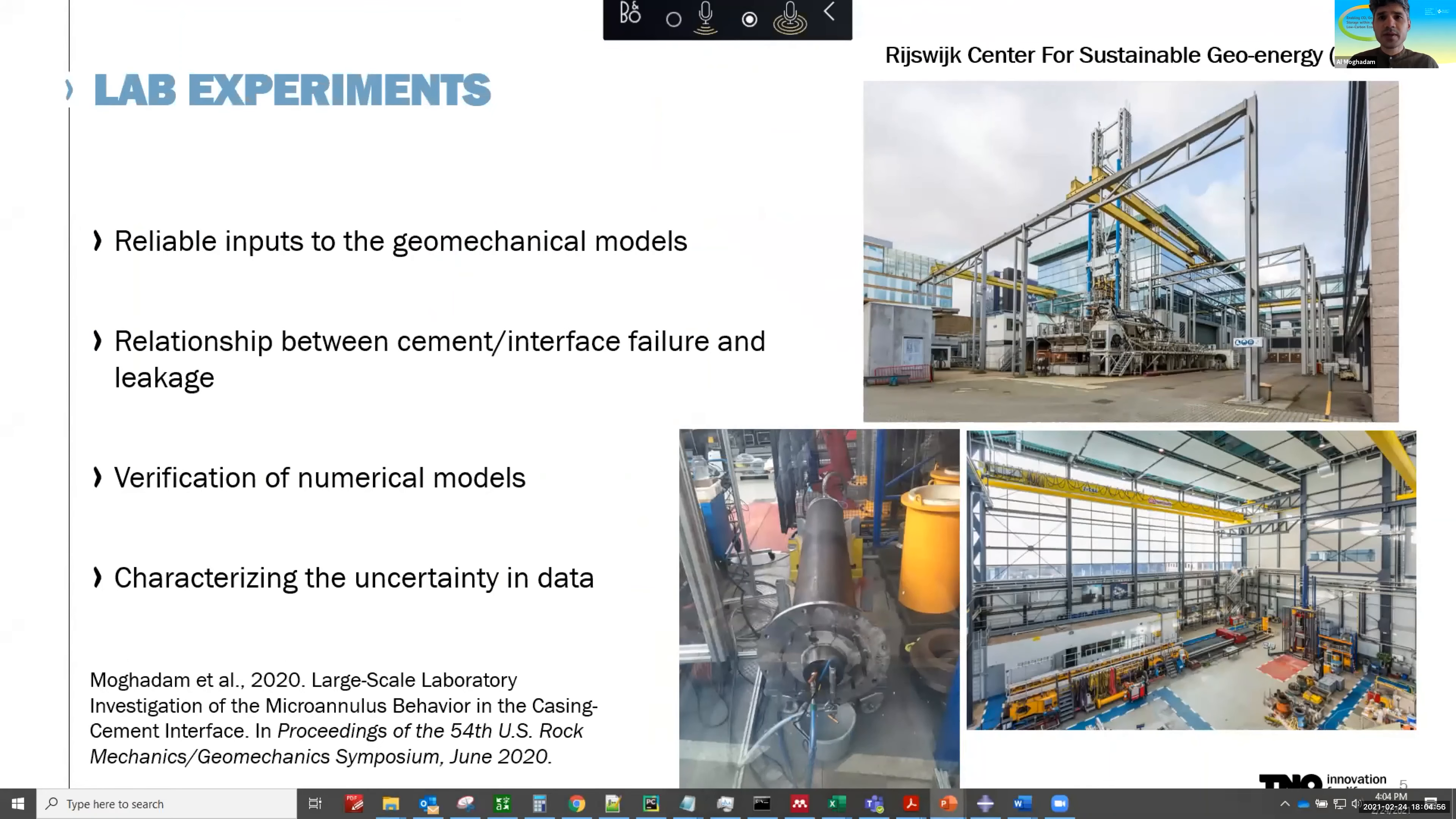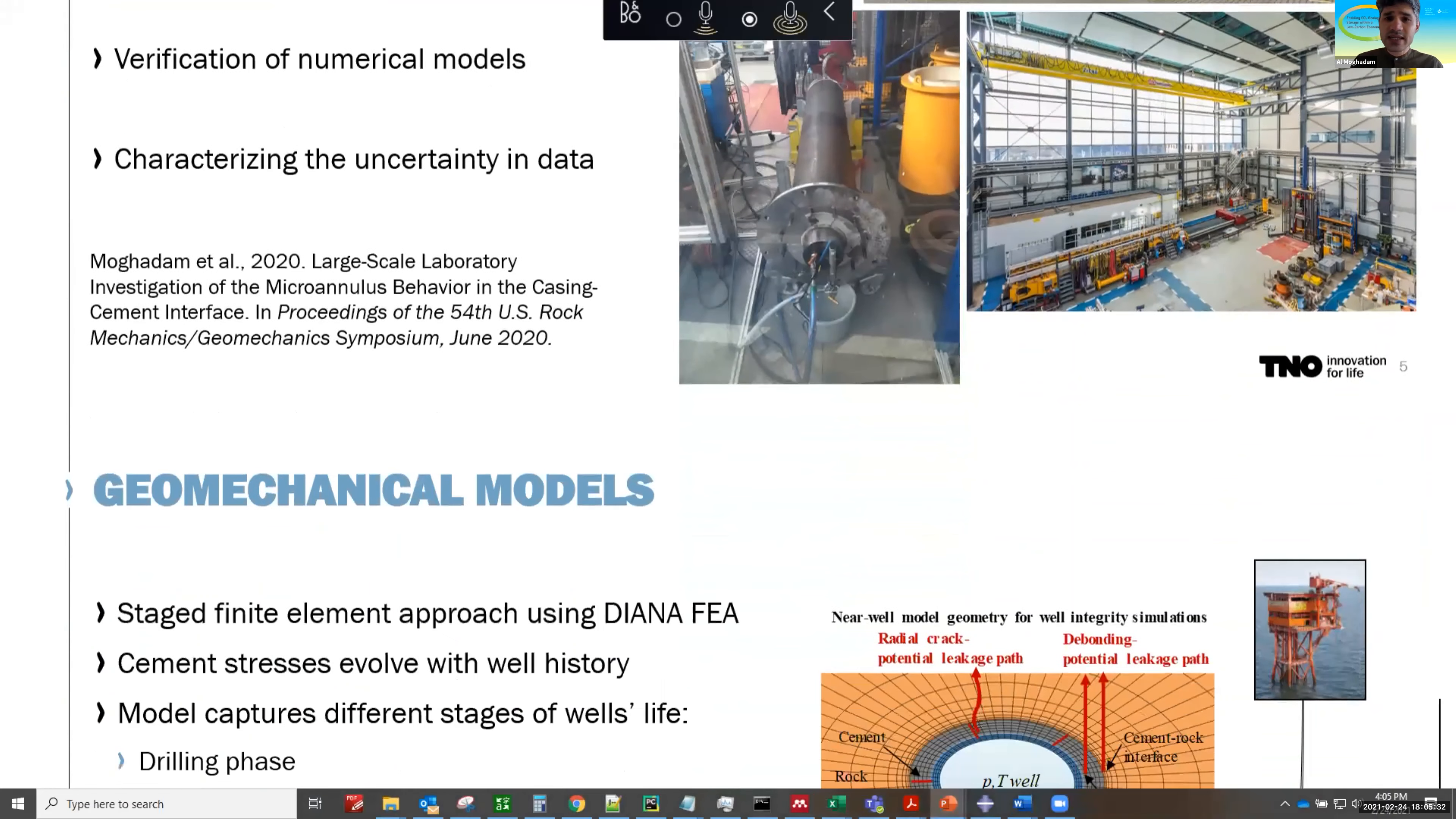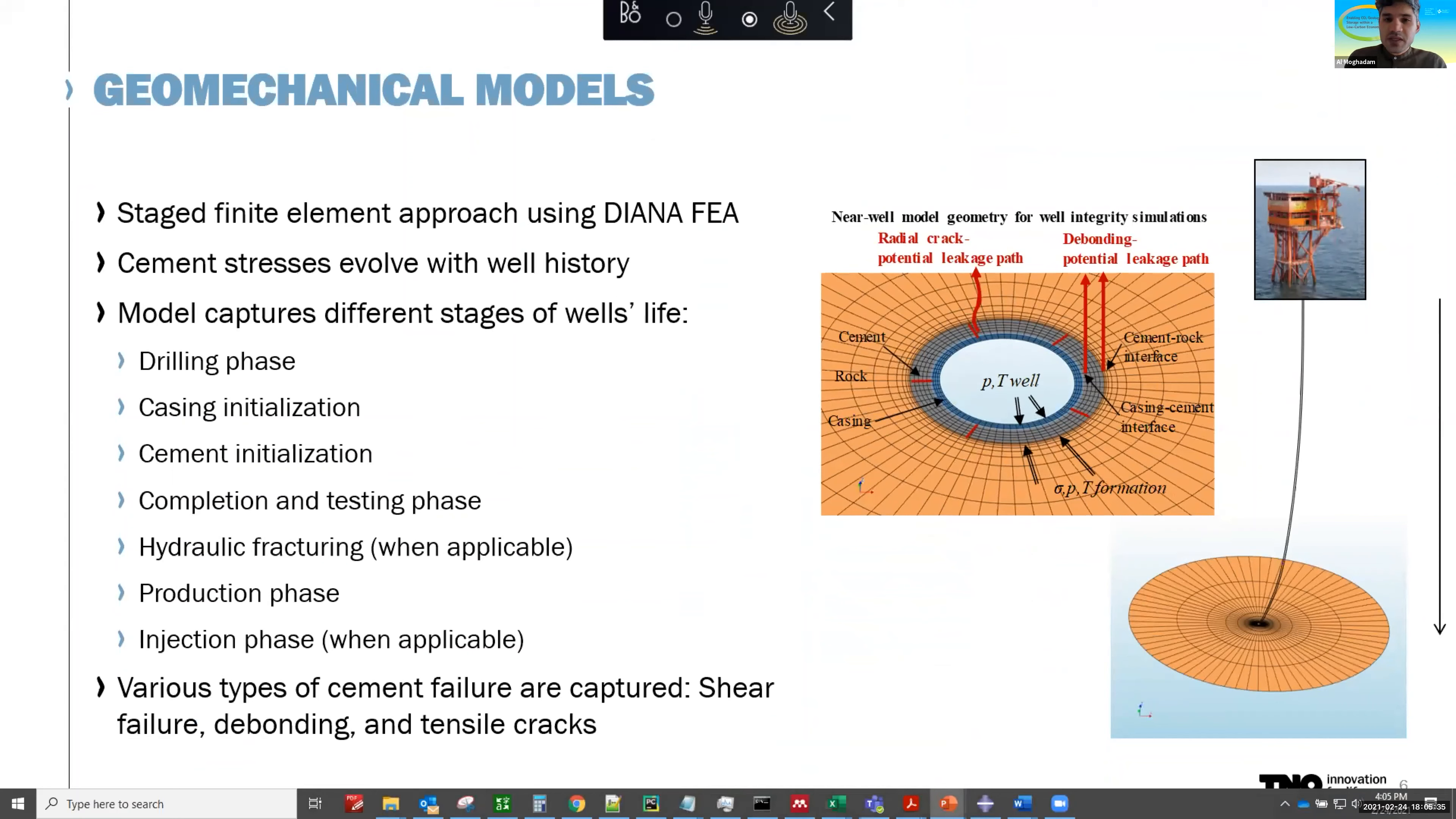So at the end, we have a tool where operators can look at different parameters, put it together and essentially get a probability of failure for that well so they can weigh their operational decisions and then minimize that risk. So here in this talk we're not really focused on the lab experiment part, kind of talk a bit more about the geomechanical modeling and risk assessment framework that we've done. But a very quick overview. The lab experiments that we've done are done in Reisweig Center for Sustainable Geo Energy, here in Netherlands. This place, this lab focuses on kind of real scale well simulations. So we have real scale wellbores on site and we can cement casings and so on. And we've generated some of this data and some of it is published. And this has allowed us to benchmark and verify some of our models and look at some relationships between cement damage and leakage rates and so on.